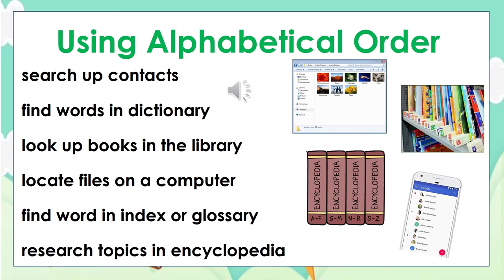You must be thinking: why do we need to alphabetize a list? Here is what alphabetizing helps us with. It helps us to search up contacts, find words in the dictionary, look up books in the library, locate files on our computer, find words in an index or glossary, and research topics in an encyclopedia.